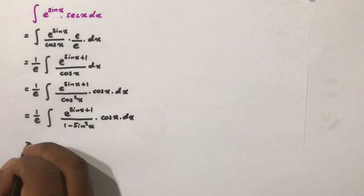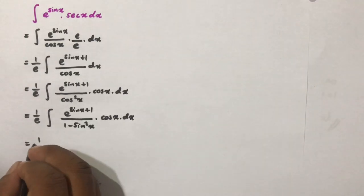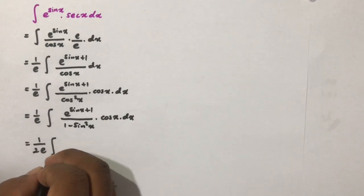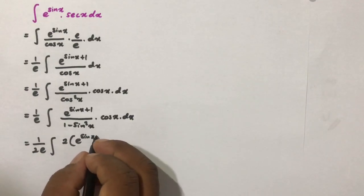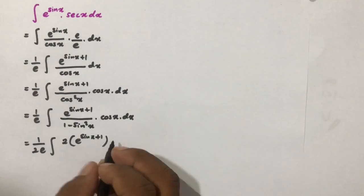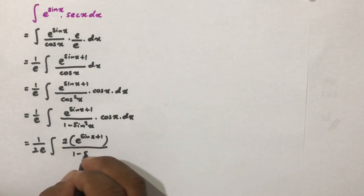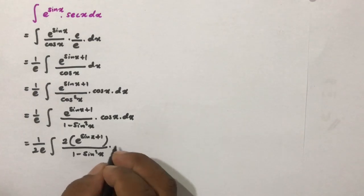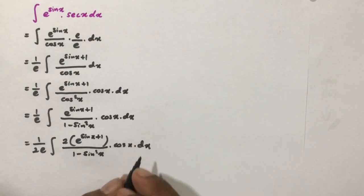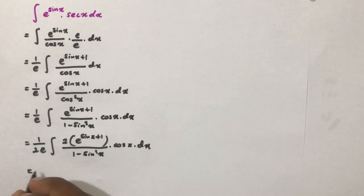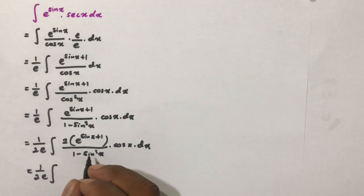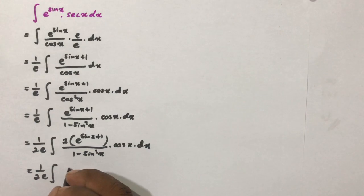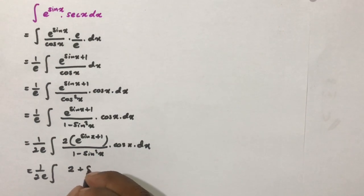Now I am going to multiply by 2 over 2 in both numerator and denominator, giving 1 over 2 times e times the integral of 2 times e to the sine of x plus 1 over 1 minus sine squared of x times cosine of x dx.